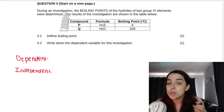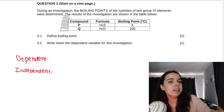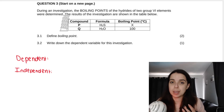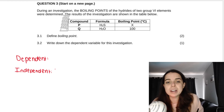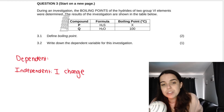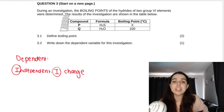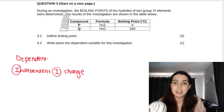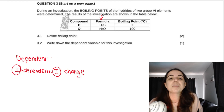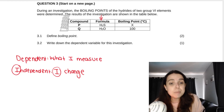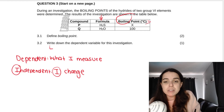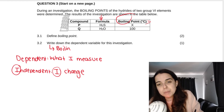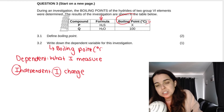Question 3.2 says: write down the dependent variable for this investigation. The independent variable is the one I change — think 'I, independent, I change' — so that would be the type of compound. The dependent variable is what I measure. In this experiment we are measuring the boiling points. So the dependent variable is boiling point, and it's always a good idea to include the unit of measurement next to it.